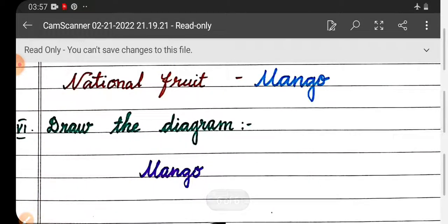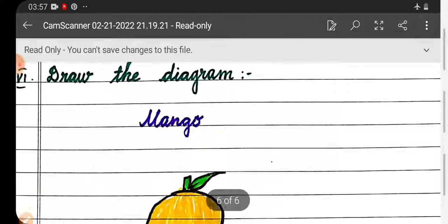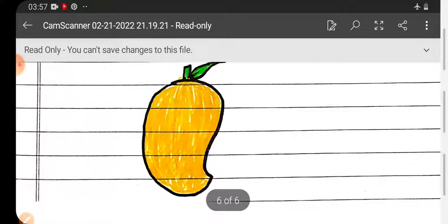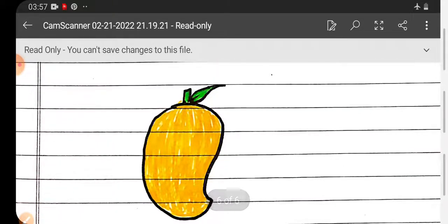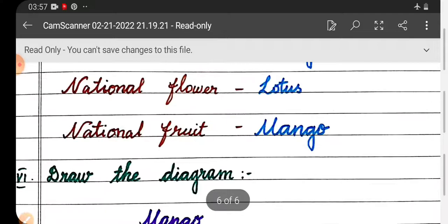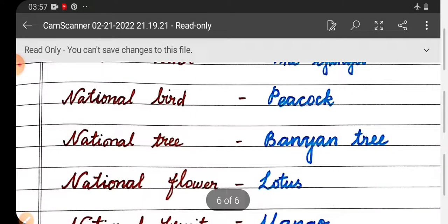Sixth, Roman letter six: Draw the diagram of mango. Okay, try it on your own, it will be easy for you. Okay, thank you.